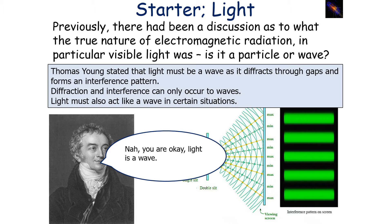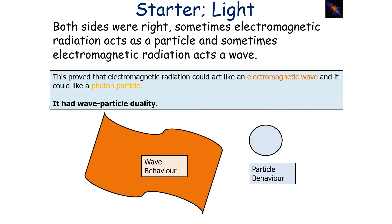Now which side was right? Well, actually both sides were right. Sometimes electromagnetic radiation — photons — acts as a particle, and sometimes electromagnetic radiation acts as a wave. So this proved that electromagnetic radiation could act as an electromagnetic wave, or it could act like a photon particle.